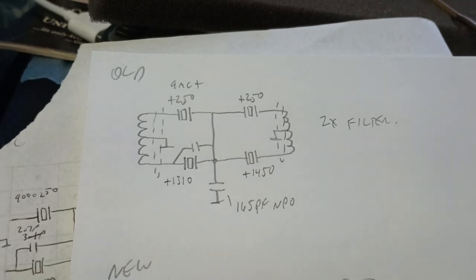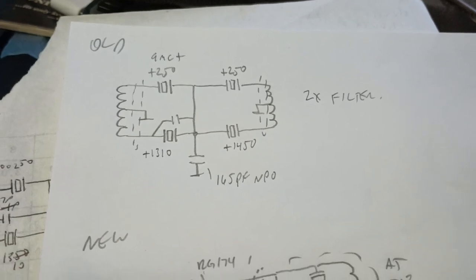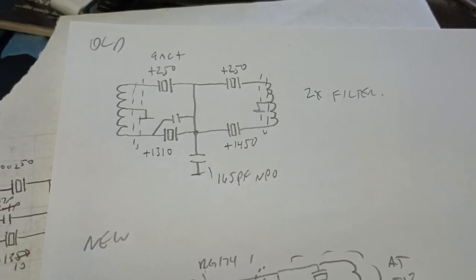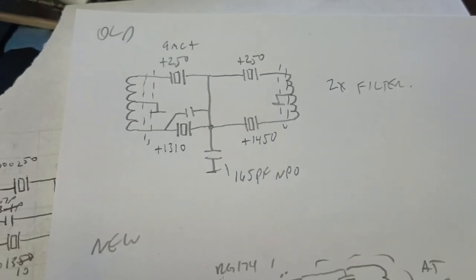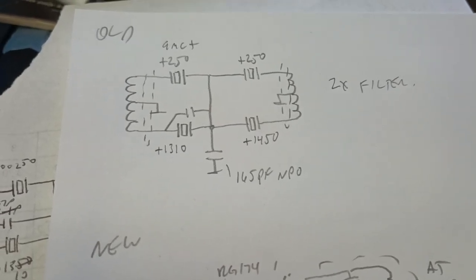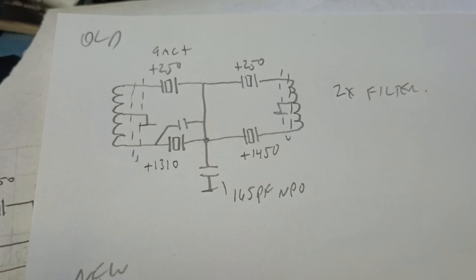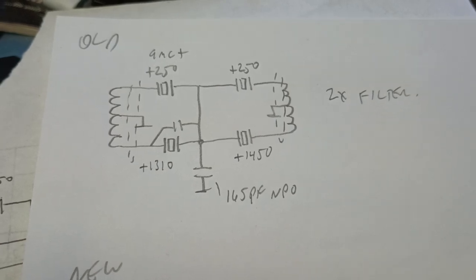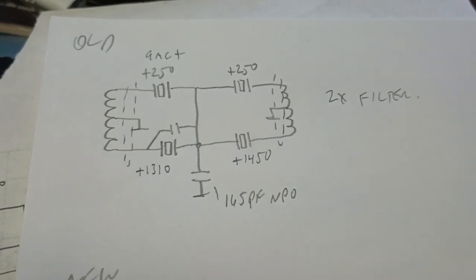There's this original schematic of the original Drake filter. That's one filter. The crystals and everything in between the symbols for the transformer windings are switched for the different sidebands. Four crystals, a 165 picofarad capacitor called a neutralizing capacitor. And in my filter, there was one padding capacitor above the 1310 crystal. And the numbers 250, 250, 1310, and 1450 are the frequency above 9 MHz. So, the top two crystals are 9.000250, and the bottom 9.001310 and 1450.